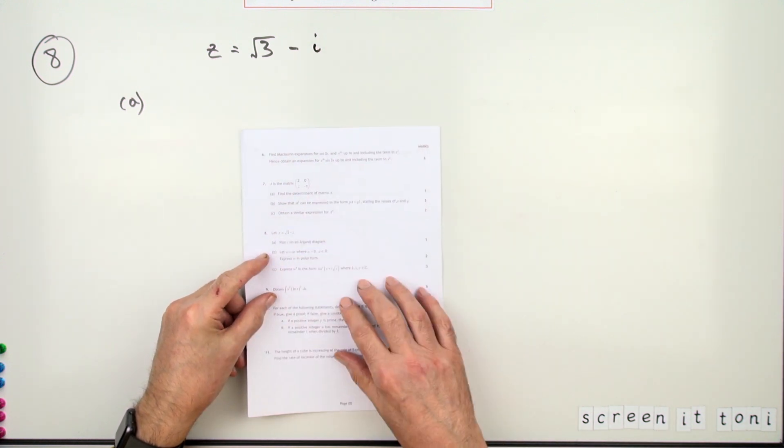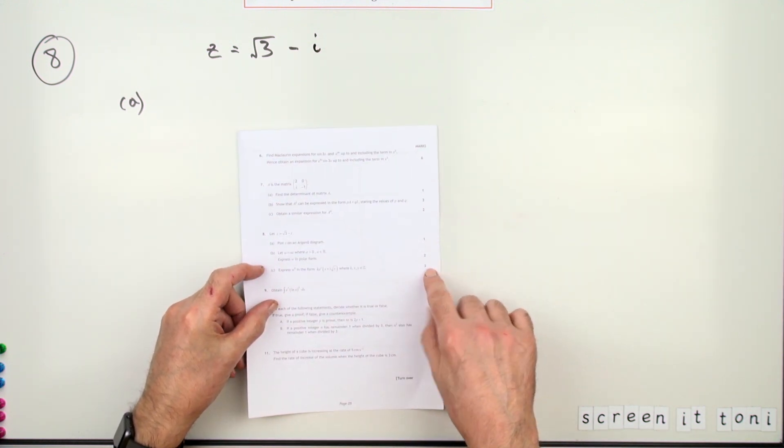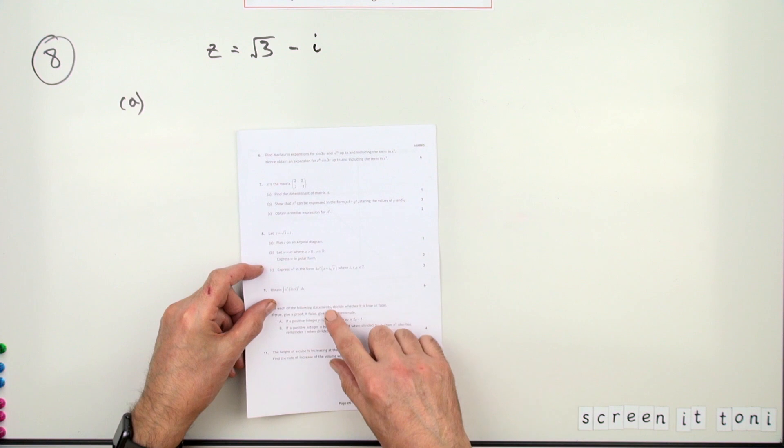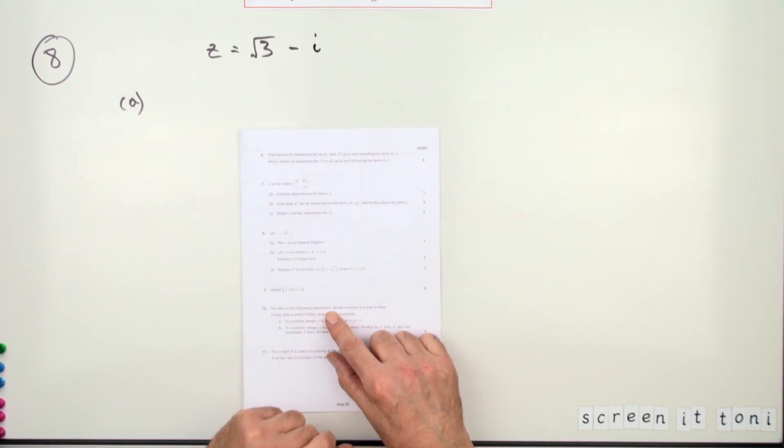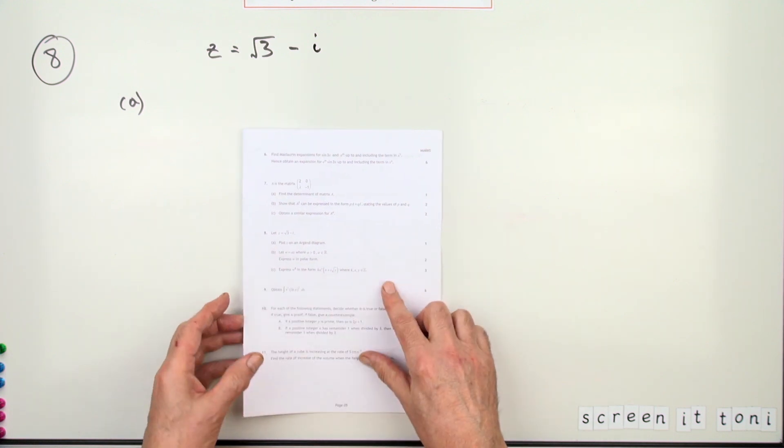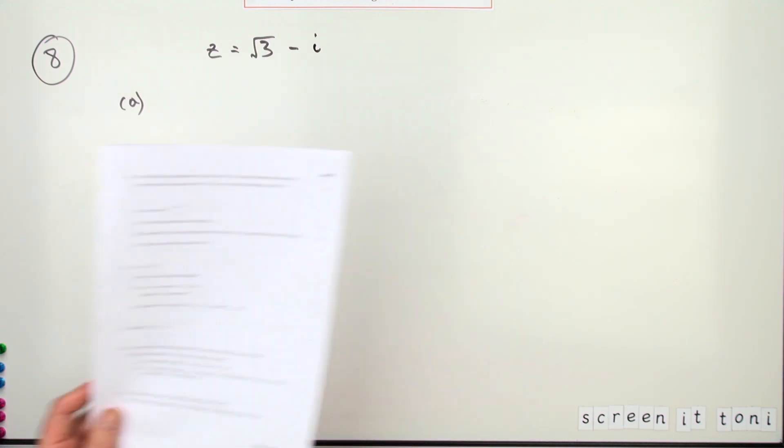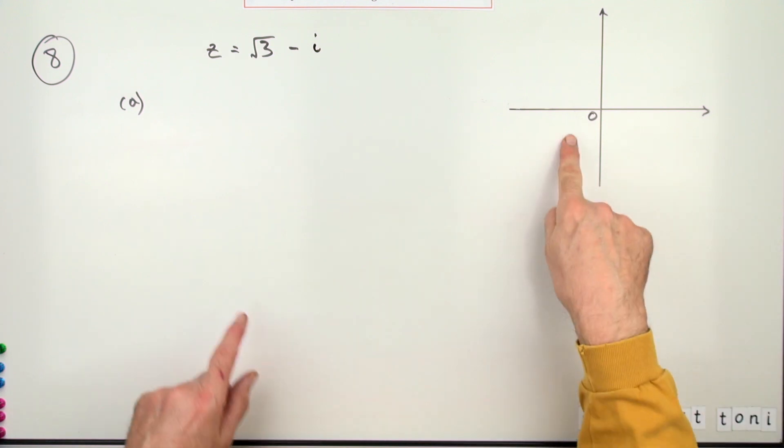Number eight, then, from the 2016 Advanced Higher Maths—another six-mark question, just a little one on complex numbers. Here's a complex number. Part A, just for one mark: plot z on an Argand diagram. Well, an Argand diagram...